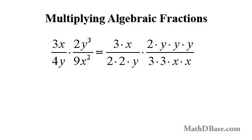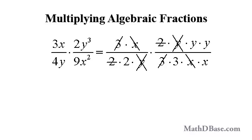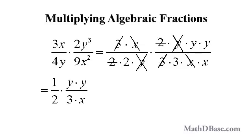This gives us 3 times x over 2 times 2 times y, multiplied by 2 times y times y times y over 3 times 3 times x times x. Cancel all common factors in the numerators and denominators, which will leave just 1 in the numerator of the first fraction and 2 in the denominator, and y times y in the numerator of the second fraction and 3 times x in the denominator.